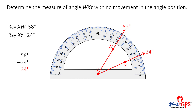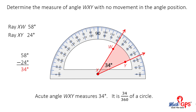Let's count to see if the angle measures 34 degrees: 10, 20, 30, 31, 32, 33, 34. Acute angle WXY measures 34 degrees. It is 34/360ths of a circle.